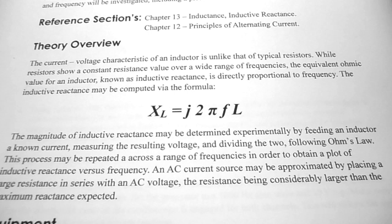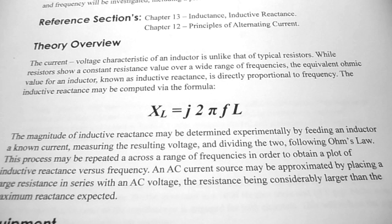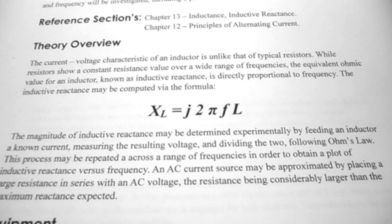Under theory overview, we're talking about the current-voltage characteristics of an inductor being unlike that of a typical resistor. While resistors show a constant resistance value over a wide range of frequencies, the equivalent ohmic value for an inductor, known as inductive reactance, is directly proportional to frequency. The inductive reactance may be computed via the formula XL equals j2πFL, where F is the frequency. As you change the frequency, you change the value of XL.